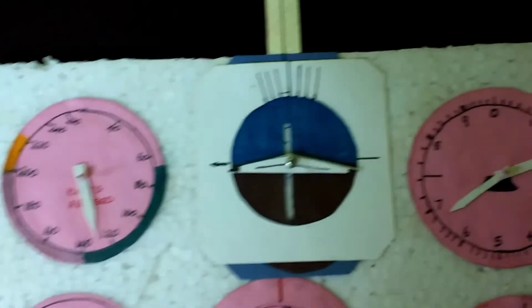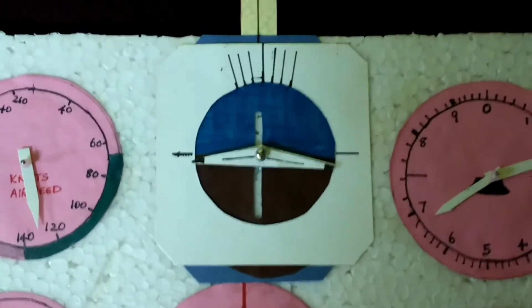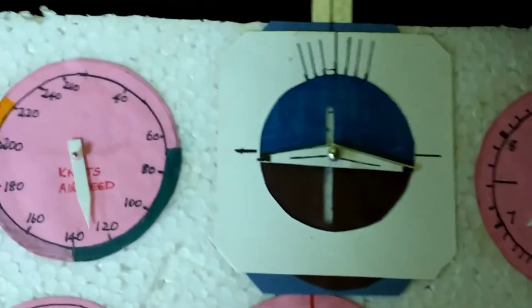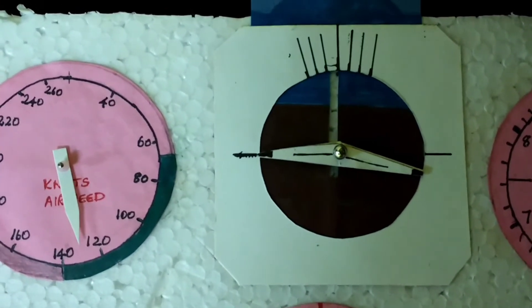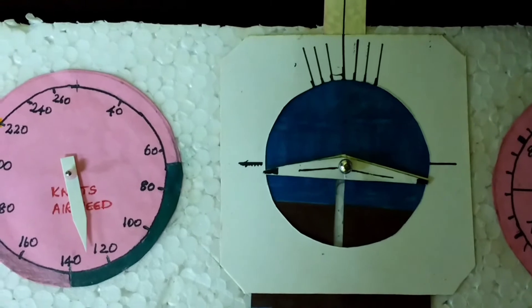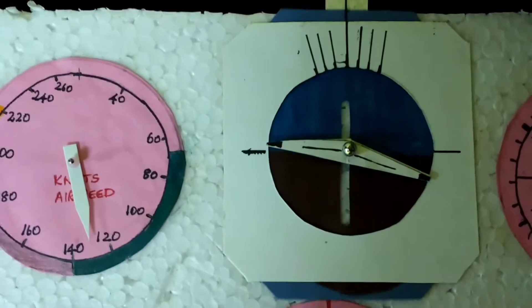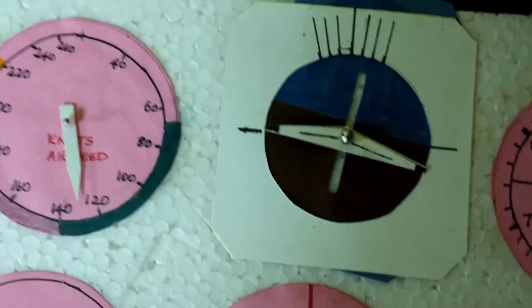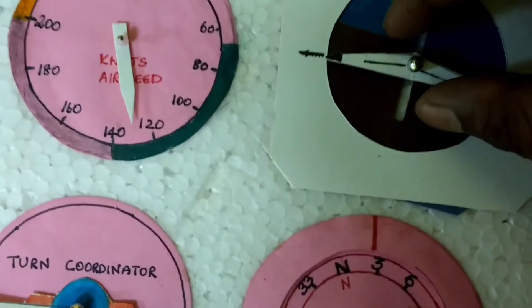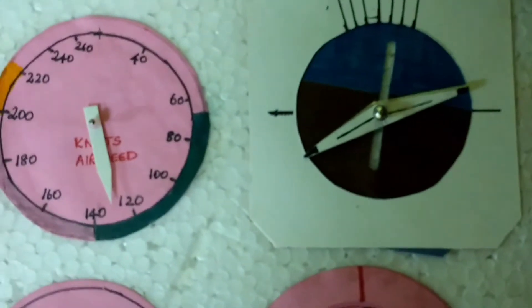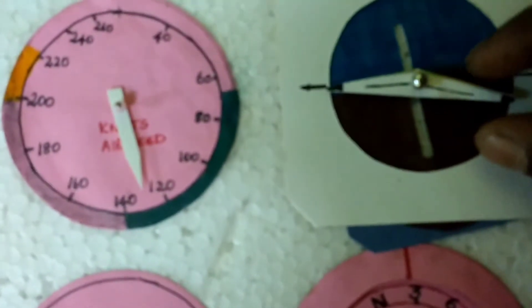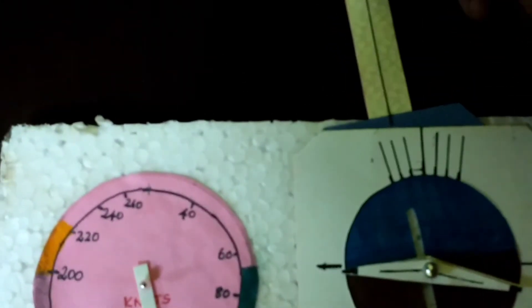The second instrument is the artificial horizon. With the artificial horizon, we can see whether the flight is climbing or descending and the bank. You can adjust the wing so that you can see the bank. You can bank on both sides, and there's a flap here that you can use to move it sideways, forward, and backward.